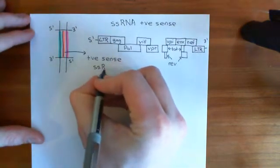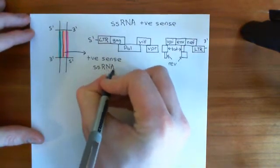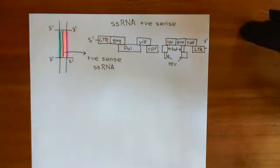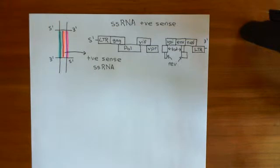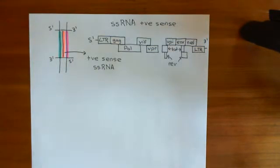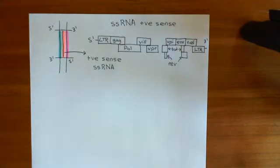Therefore, we can produce as many viral genomes as we want. We can see how we're going to replicate the viral genome. But how are we actually going to make the other proteins that are associated with the virus? How are we going to make those three important enzymes — reverse transcriptase, integrase, and protease? How are we going to make the P24 that we need to assemble the capsid, the P17 that we need for the matrix, and the GP41 and the GP120 that we need on the viral envelope?